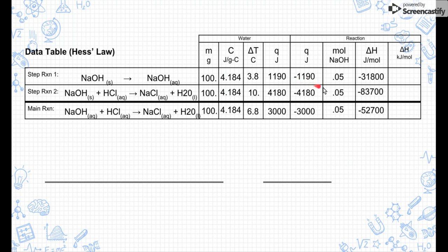I'm going to calculate that out. I'm going to take negative 1,190 divided by 0.05, negative 4,180 divided by 0.05, and negative 3,000 divided by 0.05, and I'm going to get these in joules per mole. But enthalpies are usually listed as kilojoules per mole, so we're going to convert that to kilojoules by moving the decimal place over three times. This is just to give us some clean data.